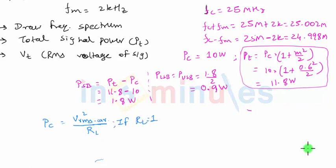If RL is equal to 1, then PC will simply be equal to VRMS squared. We all know that RMS value is nothing but peak value divided by root 2. So VC by root 2 squared will be my carrier power. Therefore, PC will be nothing but VC squared by 2. This expression is derived only when RL is 1.